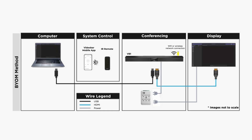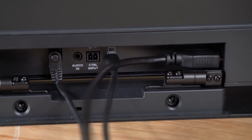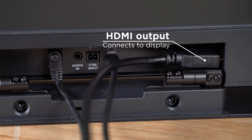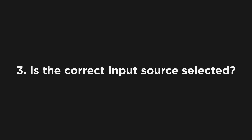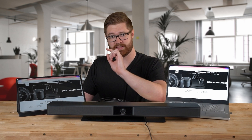The next cable to check is the VB1 to display connection. Using the HDMI port on the rear of the VB1, there should be an HDMI cable connected, and on the other end it should be connected to the video display.